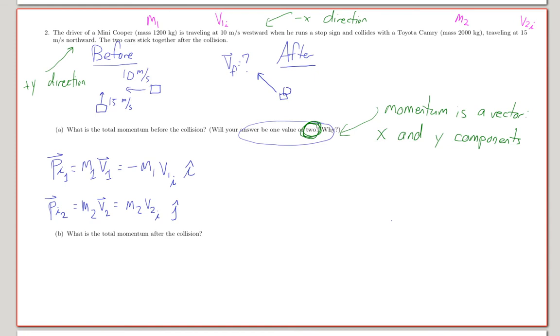So this will be M2 V2 i in the positive j direction. Now, the whole point of part B is that the total momentum... I didn't finish part A. I'm supposed to find the total momentum. That means add them together. So the initial momentum total is just the sum of those, which would be minus M1 V1 i-hat plus M2 V2 i j-hat.